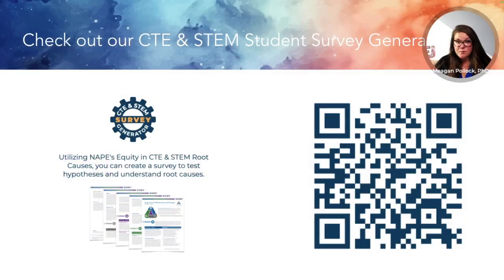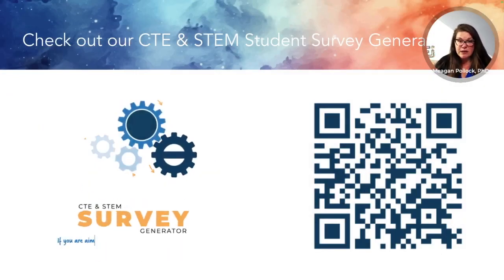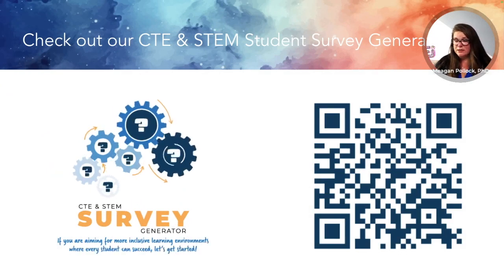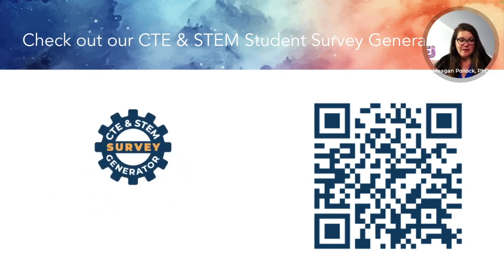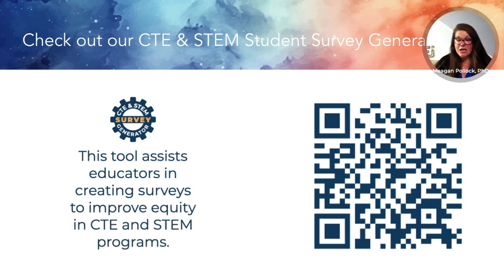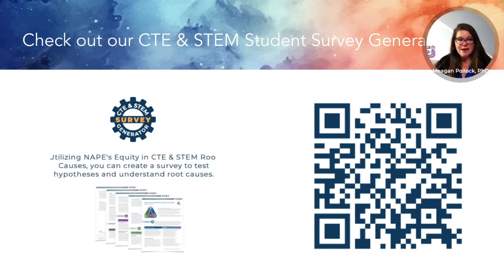The next design best practice is relevant questions. Every question should directly contribute to your survey's objectives, helping you validate or disprove your hypotheses. This focus helps avoid unnecessary questions that could extend the survey needlessly, potentially leading to respondent fatigue and disengagement. After years of working with educators, we've found that one bottleneck is supporting educators in crafting surveys that help uncover root causes. We encourage you to check out our CTE and STEM student survey generator to help create a targeted survey. Please check the comments for more information and resources.